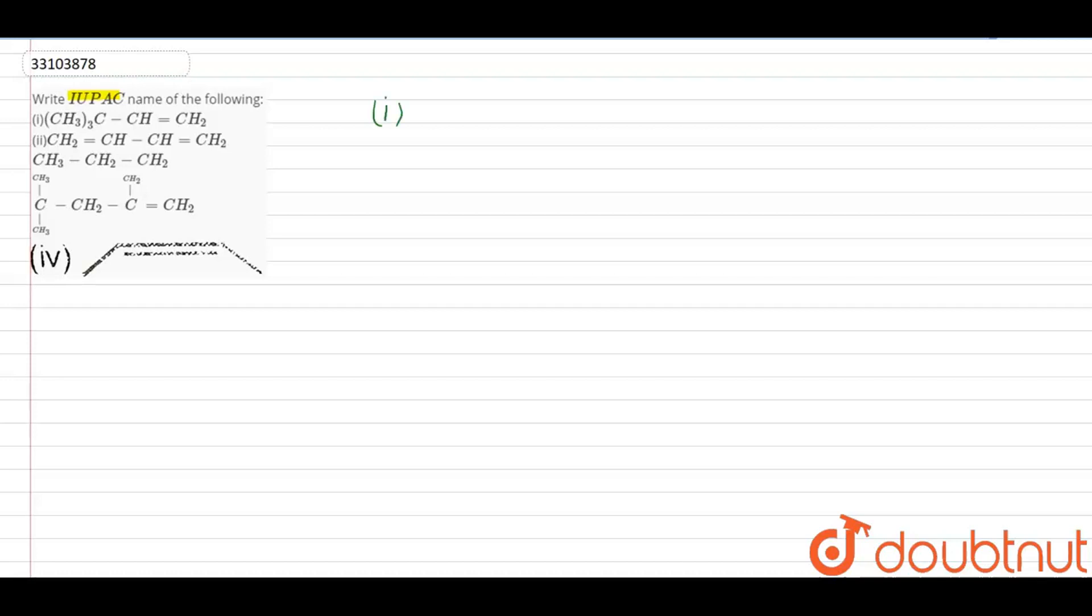So, the first question is CH3, CH3, C, single bond CH, double bond CH2. This one is again, CH3, this one is CH, double bond CH2, this one is again CH, double bond CH2. So, this name is 3,3-Dimethyl-butene.